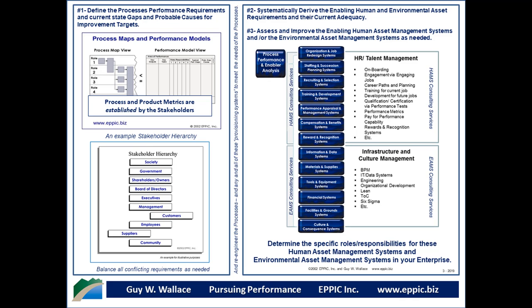On the non-human side, we can begin to look at the information and data systems, material and supply systems, tools and equipment systems, the financial systems, the facilities and ground systems, and the culture and consequence systems that encompass the environment in which humans work within the process parameters. Determining the specific roles and responsibilities for these human asset management systems and the environmental asset management systems in your enterprise is the key to performance improvement.